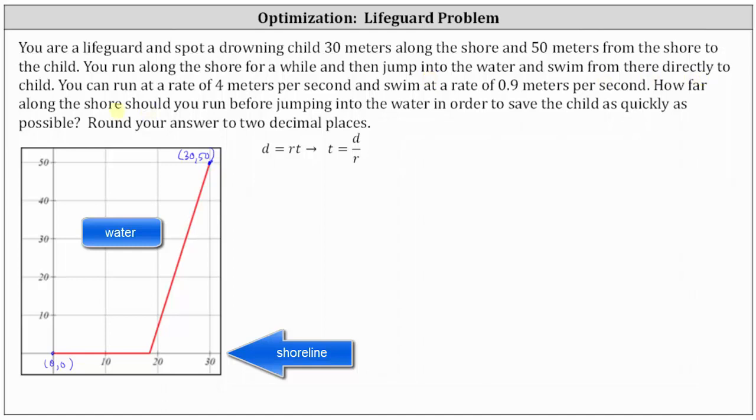You can run at a rate of 4 meters per second and swim at a rate of 0.9 meters per second. How far along the shore should you run before jumping into the water in order to save the child as quickly as possible? Round the answer to two decimal places.